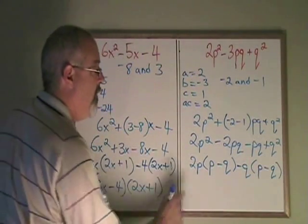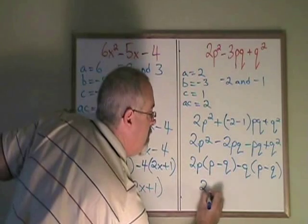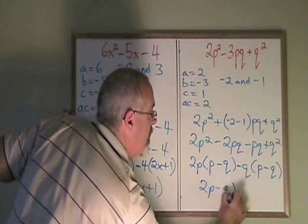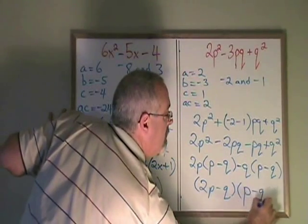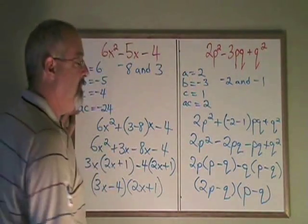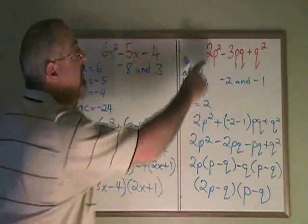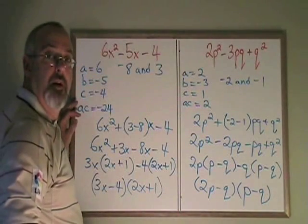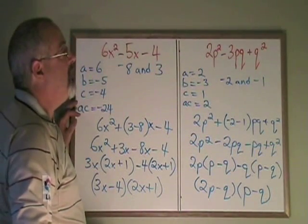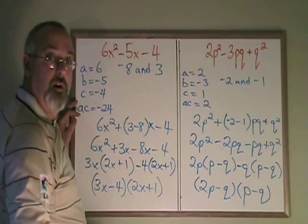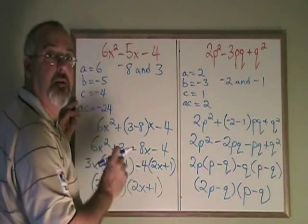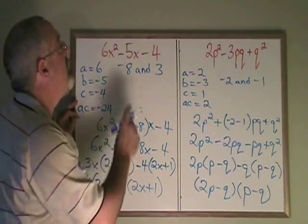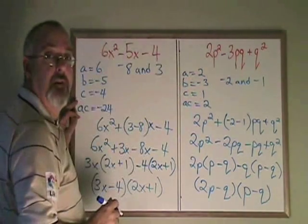My final answer therefore will be 2p minus q written together in a bracket and p minus q written only once. If I multiply these two binomials together, I will get my original trinomial. So we can see that the complex trinomial method works. It has a couple of extra steps. But once we learn those steps, it is a powerful method that will allow us to factor any trinomial of this form.